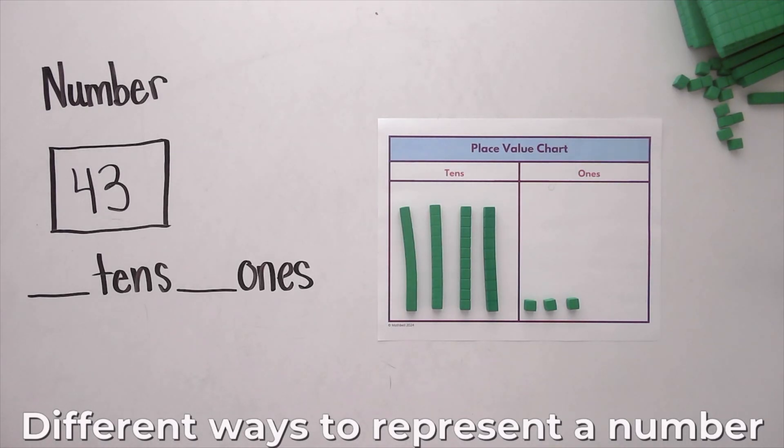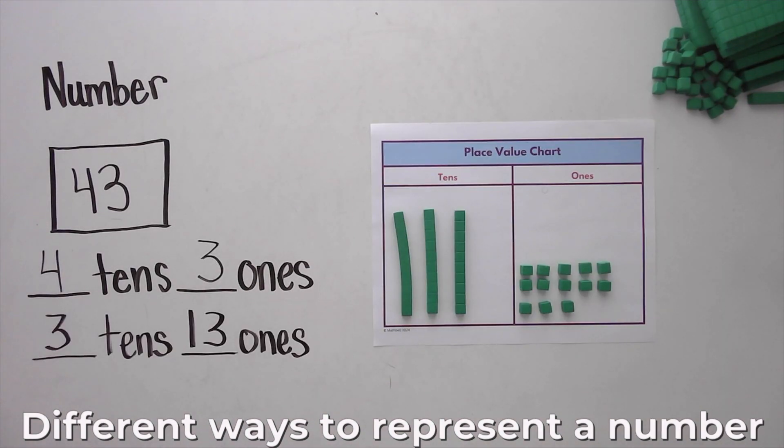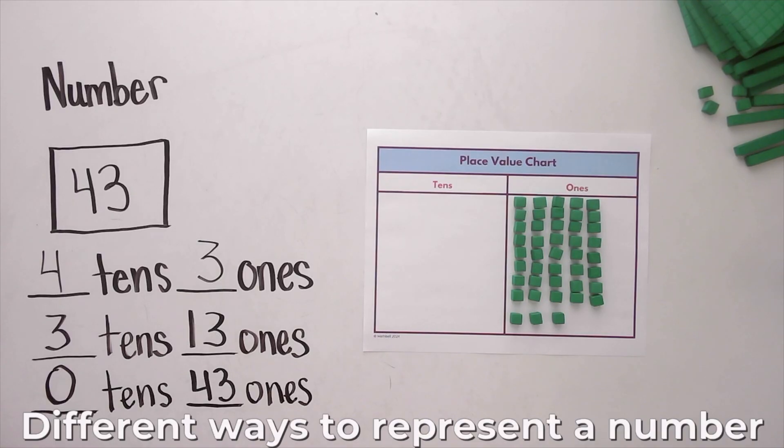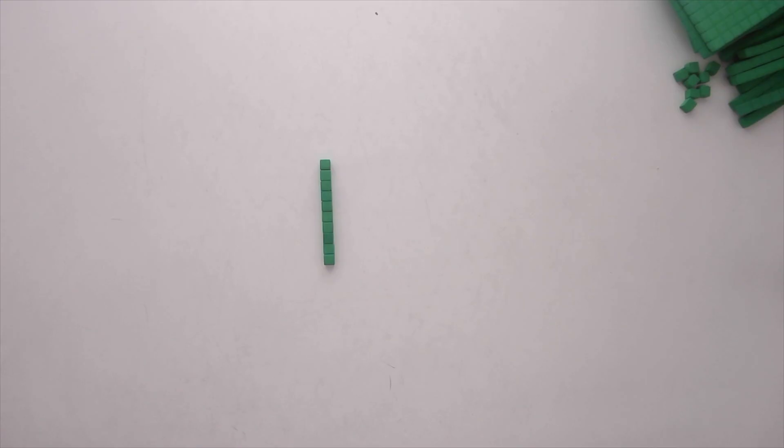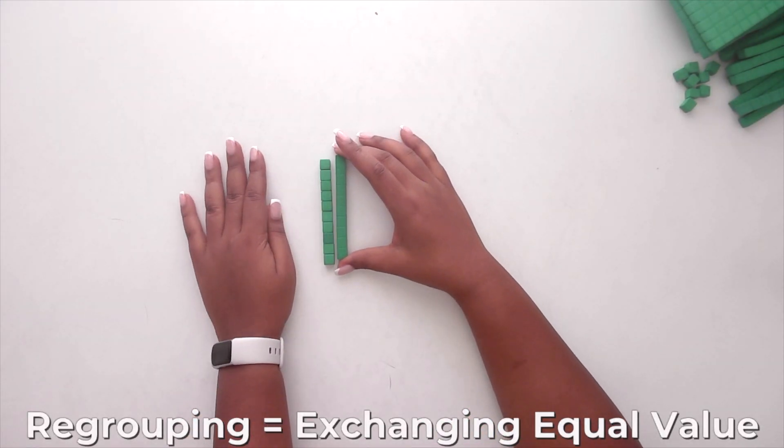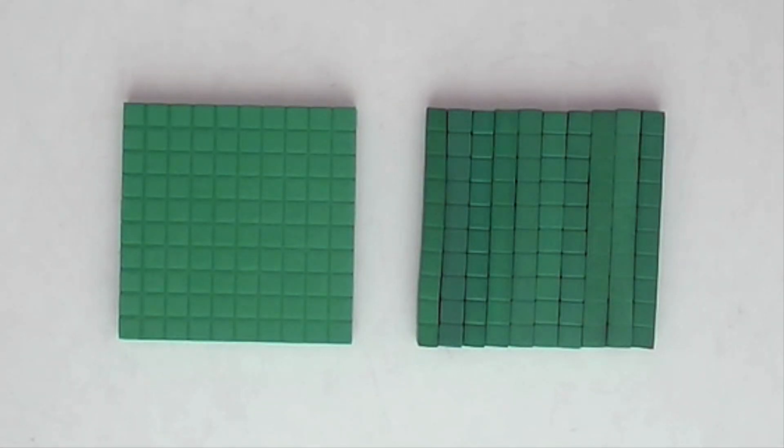Once students see numbers as groups of 10, they can also see that there's more than one way to show the same number. For example, 43 can be 4 tens and 3 ones, 3 tens and 13 ones, or 43 ones. This flexibility is closely connected to regrouping, which we use when adding, subtracting, multiplying, and dividing. Regrouping here means exchanging one type of block for an equal value of another: 10 ones for 1 ten, 10 tens for 100, or the reverse, breaking 100 into 10 tens.